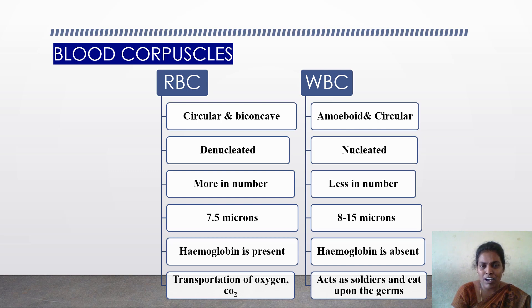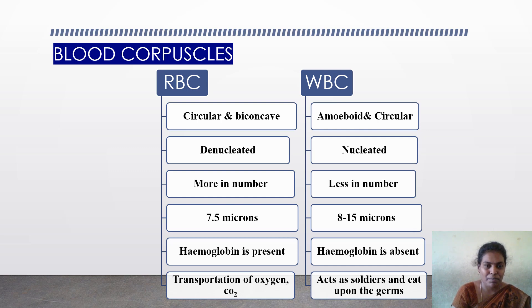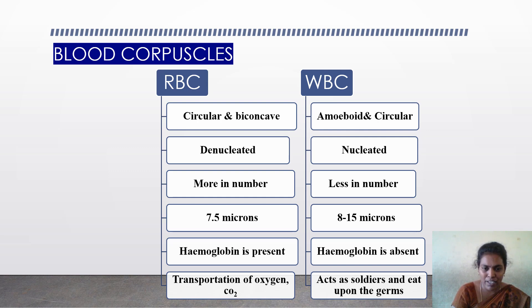Every cell of the body contains a nucleus, but in the case of red blood cells, the nucleus is absent — that is why RBC is called denucleated. Nearly 5 to 5.5 million RBC are present in 1 cubic millimeter of blood, which is called the blood count. The size of RBC is nearly 7.5 microns. RBC contains hemoglobin, the red pigment that gives red color to the blood, which is also called respiratory pigment.